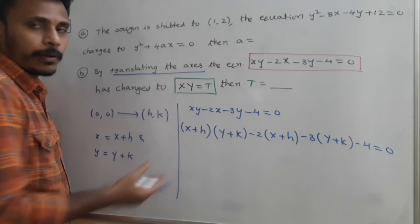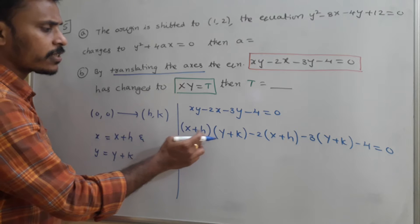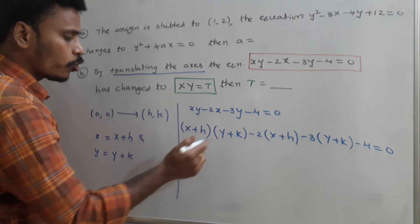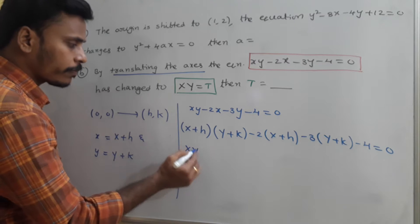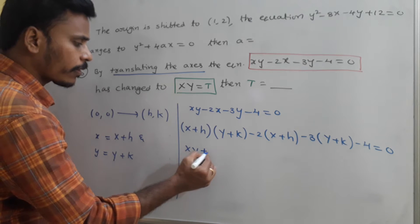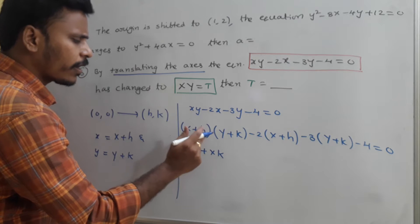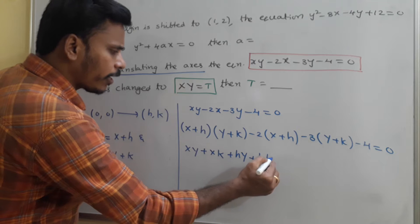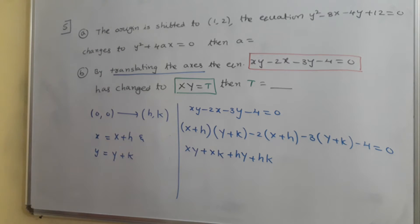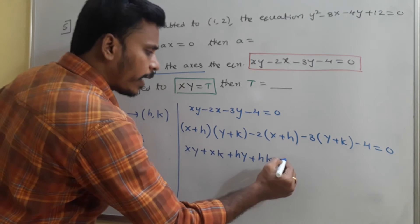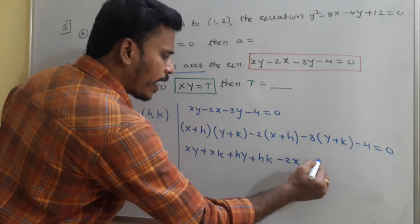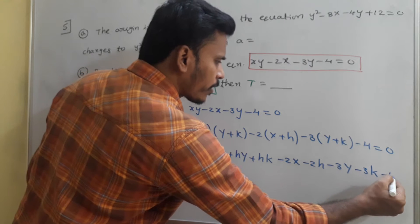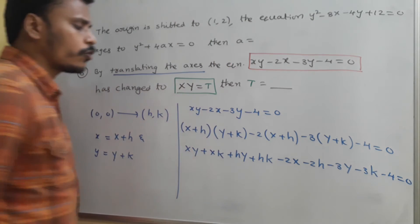Now multiply: x plus h into y plus k. So X into Y gives XY, X into k gives Xk, h into Y gives hY, and h into k gives hk. Then minus 2 times x plus h gives minus 2X minus 2h, and minus 3 times y plus k gives minus 3Y minus 3k, minus 4 equals 0.